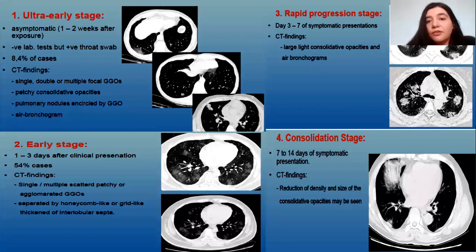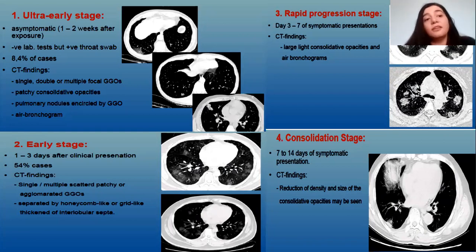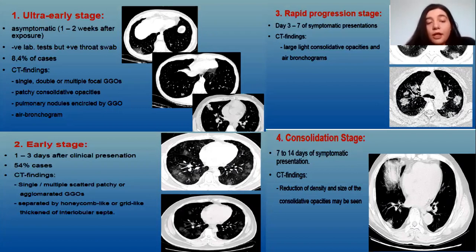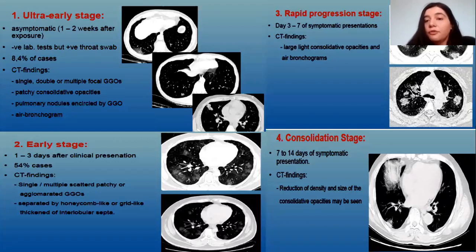In the ultra-early stage, when the patient is still asymptomatic with negative labs but positive throat swab, we can see single or double focal ground glass opacities, patchy consolidation opacities, pulmonary nodules encircled by ground glass opacities, and air bronchograms. In the early stage, one to three days after clinical presentation, CT scan can show single or multiple scattered patchy or agglomerated ground glass opacities separated by honeycomb-like or grid-like thickening of the interlobular septa. In the rapid progression stage, three to seven days after symptomatic presentation, CT shows large consolidative opacities and air bronchogram.